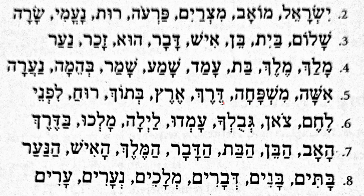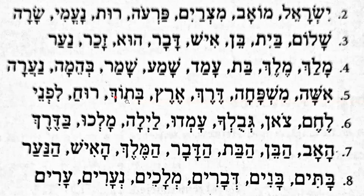And the next is Derek. Here also we see a Dagesh — the function is a weak Dagesh because it comes in a Begadkephat letter. Eretz. And Betho. Here, this is Kaf — final Kaf. Usually you will get a Sheva with the final Kaf, but that doesn't have any sound. So: Betho.